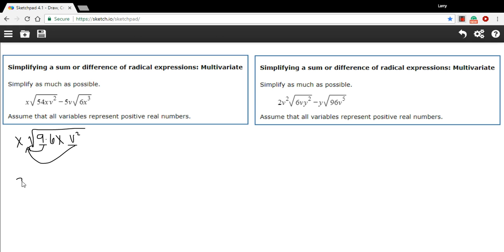So I'm going to write this as 3 times v times x, and that means this 9 goes away and so does the v squared. What that leaves inside the radical sign is the 6 and the x, and I don't think there's anything else I can do with those, so we'll just leave that as it is. So that's our first term simplified as much as I could.